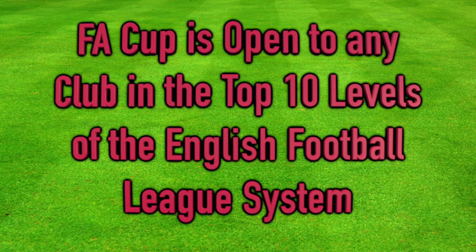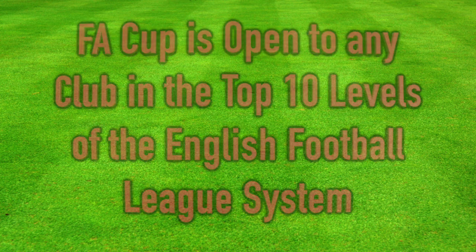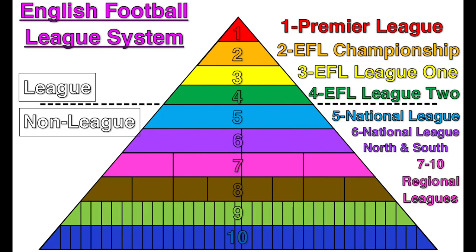Which teams are allowed to participate in the FA Cup? The competition is essentially open to any club from level 1 to level 10 in the English Football League system. The English Football League system is an organizing pyramid — a series of interconnected leagues for men's football in England and Wales. There are more than 140 individual leagues, and here's a look at the top 10 levels: the Premier League at the top, the most prestigious league in England and also the most watched sports league in the world.